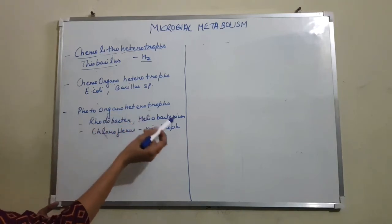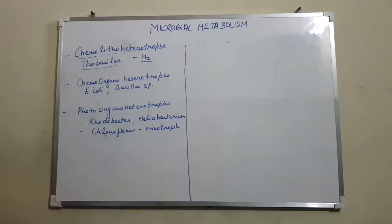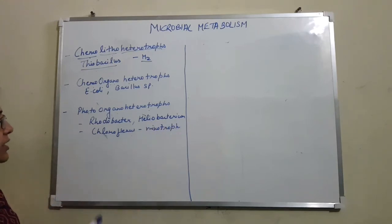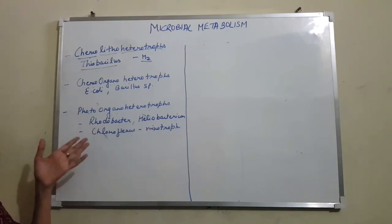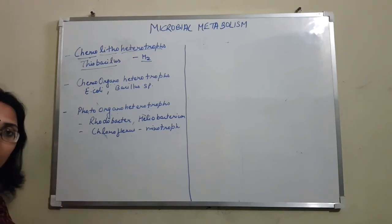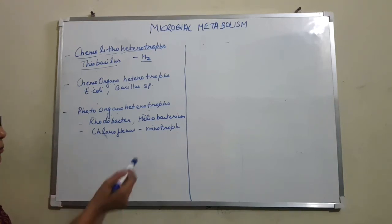The last category is photo-organo-heterotrophs. These require light as their energy source, can only utilize organic compounds for their reducing equivalents like electrons or hydrogen atoms, and are not able to fix carbon dioxide — so they require organic compounds as their carbon source. Examples include Rhodobacter and Heliobacterium. Chloroflexus is both photo-organo-heterotrophic and photo-organo-autotrophic, meaning it can fix carbon dioxide and utilize organic compounds, making it a mixotrophic microorganism.